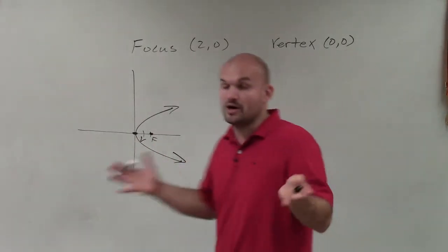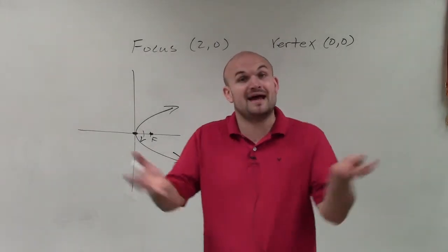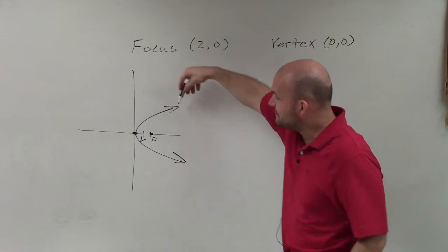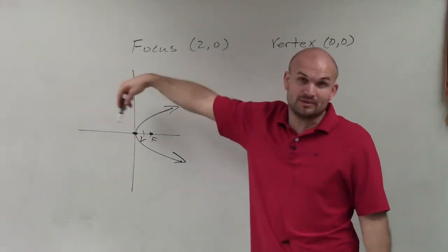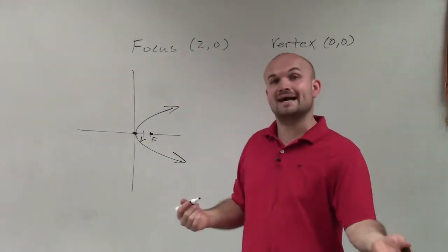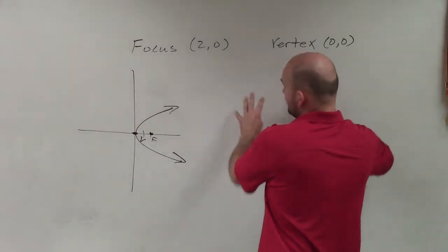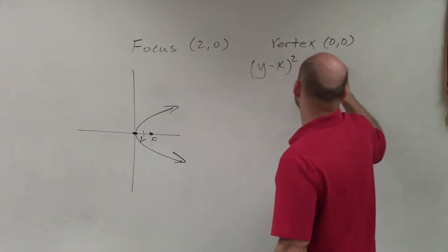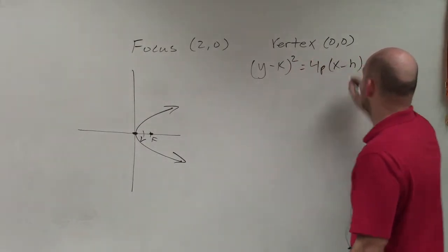So we have two different equations, one where the equation opens up or down. And that is when we think about quadratics, that's when x is squared. But now I have a parabola where it's going to open left or right. So therefore, now my y is going to be squared. So the standard form of our equation that we deal with is y minus k squared equals 4p times x minus h.